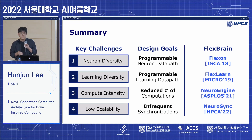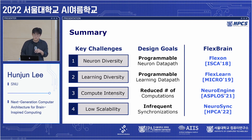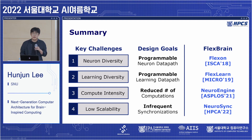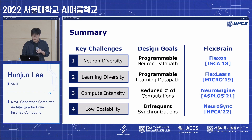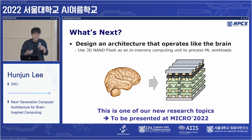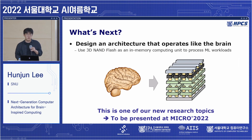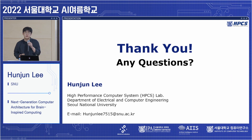In summary, we identified four critical challenges in designing an optimal brain simulation system: neuron diversity, learning diversity, compute intensity, and low scalability. We set four design goals accordingly, and FlexBrain proposes four architectural solutions: FlexZone, FlexLearn, NeuroEngine, and NeuroSync. As a side note, we are currently working on an architecture that operates more like the brain, proposing 3D NAND flash as an in-memory computing unit to process machine learning workloads — a new research topic to be presented at MICRO 2022. Thank you for listening.